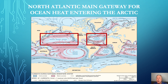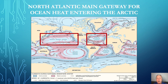Due to intense solar heating, tropical waters are warmest, and that heating also generates the trade winds blowing water from east to west. At the ocean's western boundary, those heated waters are guided towards the poles in the Gulf Stream in the Atlantic and the Kuroshio Current in the Pacific. Upon reaching the mid-latitudes, the westerly winds then guide the warm waters back towards the east.